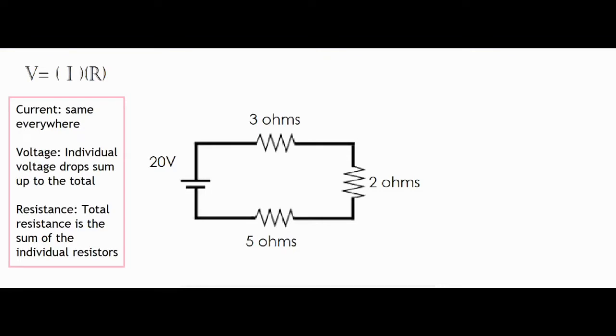So let's do a quick review. The current that flows through the circuit is going to be the same everywhere throughout the circuit. It's not going to split up into smaller amounts.